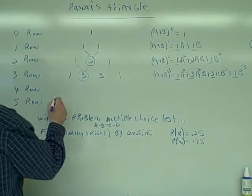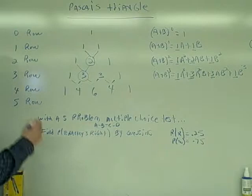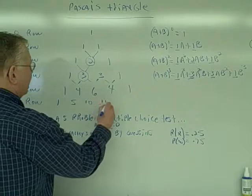So the four row: the first one is going to be a one, and then we're going to have a four, six, four, and one. And the five row would be one, five, ten, ten, five, one.